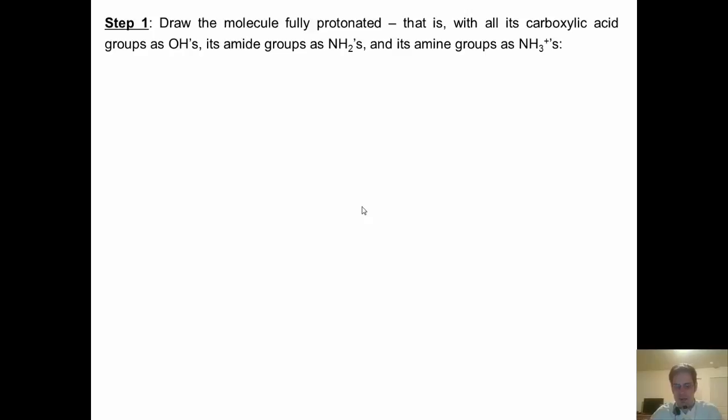So here's my step-by-step formula on how to calculate an amino acid's isoelectric point. Step 1. Draw the molecule fully protonated. That is, with all of its carboxylic acid groups as OHs, its amide groups as NH2s, and its amine groups as NH3+. For our first example, asparagine, that's what it's going to look like. I have an amide group over here. I just leave it as an NH2. NH3+ on the amine groups, and OHs as OHs instead of O-s. That's step 1.